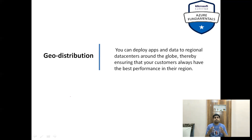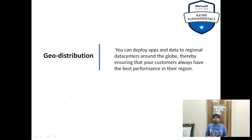The next advantage is geo distribution. Cloud data centers are located across the world in multiple continents and geographical locations. For example, if many of your customers access your application from the US, you can have a server in the US location. Similarly, if clients access from Asia, you can have a server in Asia. Having servers near your audience reduces latency and improves performance — this is achieved using the geo distribution feature.